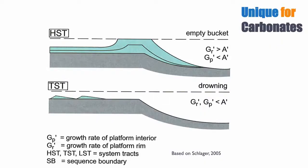Drowning — when the rate of production of the rim and platform is much less than the change in accommodation — is also unique to carbonates. You cannot drown a clastic system because clastic systems are not alive and don't require light to grow. But you can drown a carbonate system.